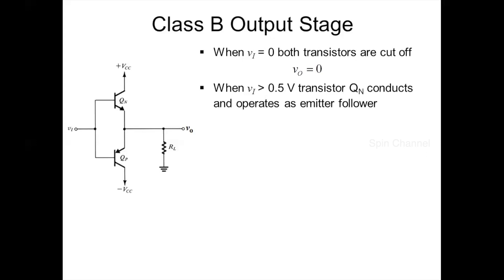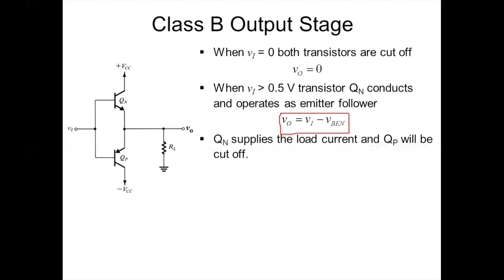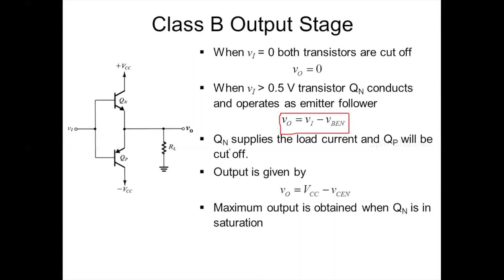This is evident by applying KVL to the output side: V0 equals Vi minus VBE(N). So if you neglect VBE(N), V0 exactly follows the input voltage. QN supplies the load current. The emitter-base junction of QP will be reverse biased by the base-emitter voltage of QN, so QP will be in cutoff. V0 can be expressed as VCC minus VCE(N). The maximum output voltage is obtained when QN is in saturation, so V0_max equals VCC minus VCE(N)_sat.